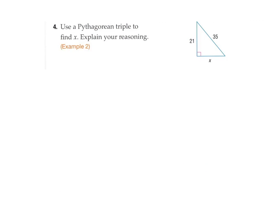So here's question number four. Is it a Pythagorean triple and find x? Well, explaining the reasoning is easy. If you get a whole number, it's a Pythagorean triple. If you don't get a whole number, it isn't. So there's your reasoning already explained.